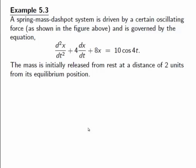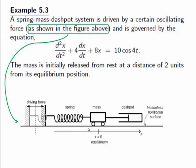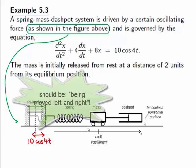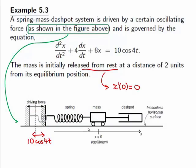Here is how we can work out this problem. We note that, in this case, a spring mass dashpot system is driven by a certain oscillating force. Now, as shown in this diagram here, we have now an oscillating force given by 10 cos 4t. Note that this force 10 cos 4t is periodic. So we expect that the support for the spring is being moved up and down. Now, we are also told that the mass is initially released from rest. So x prime at zero is equal to zero. At the same time, it is released from a distance of two units from its equilibrium. So x at zero is equal to two.